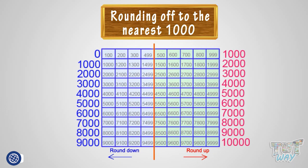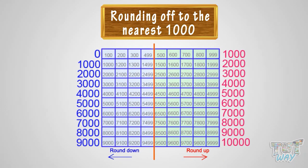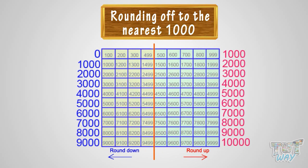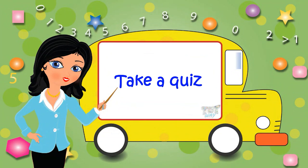So kids, we learned that in rounding off to the nearest 1,000, we round the number to the nearest 1,000 by rounding it down if it is below or before the 500 mark, and rounding it up if it is above or after the 500 mark. Now go ahead and take a quiz to learn more.